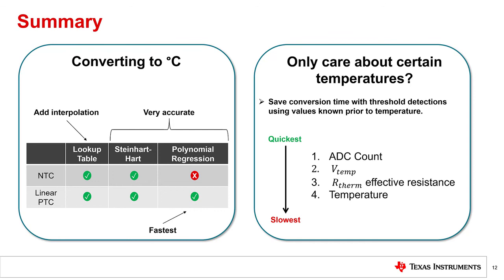If you only care about a few temperature points, consider calculating what the expected ADC count is at those temperatures and use those values to compare against the raw ADC count. This will save a lot of conversion time and would require the least amount of memory.